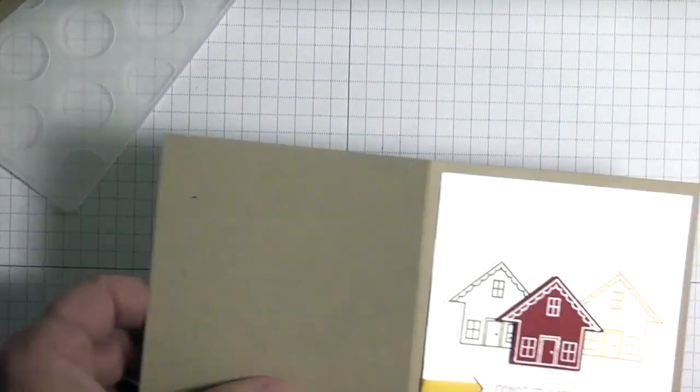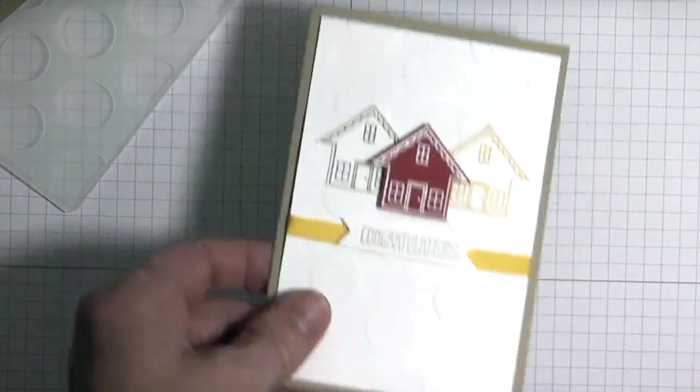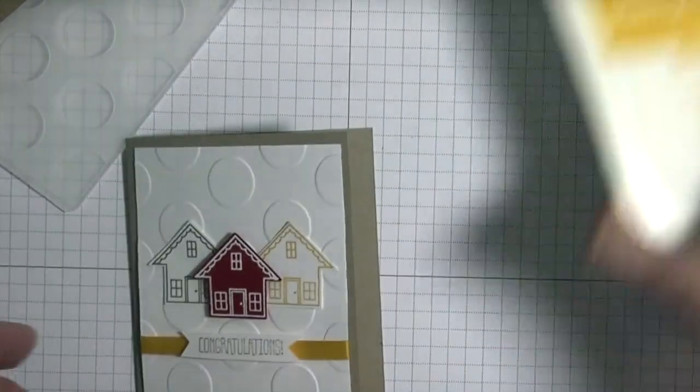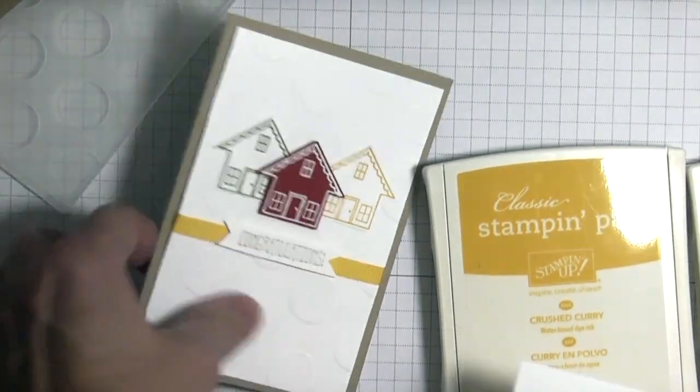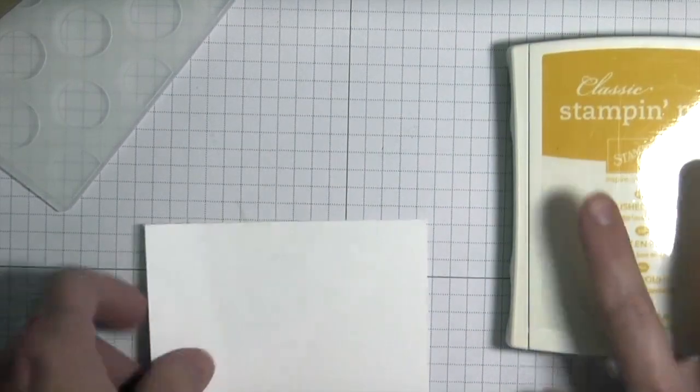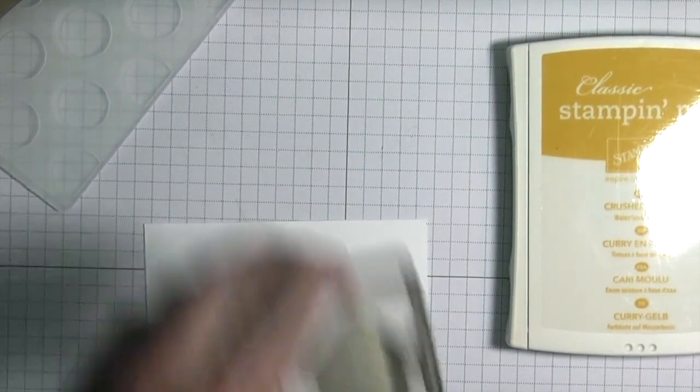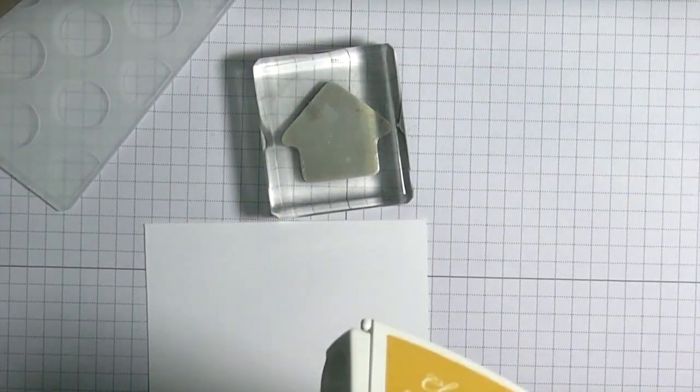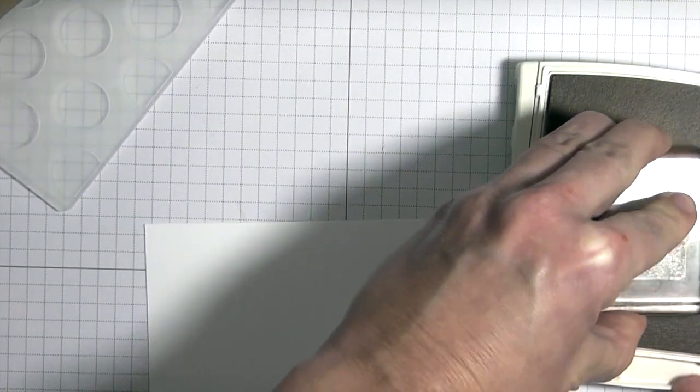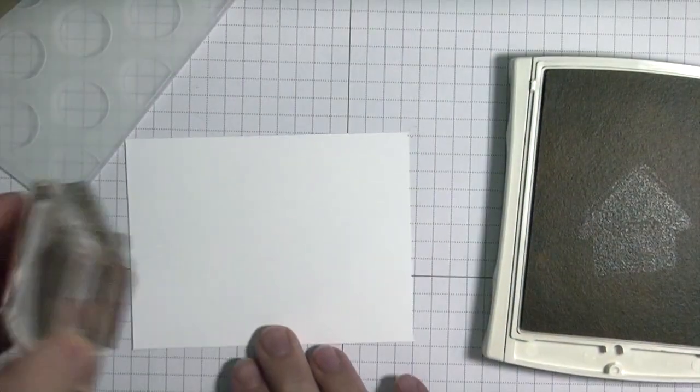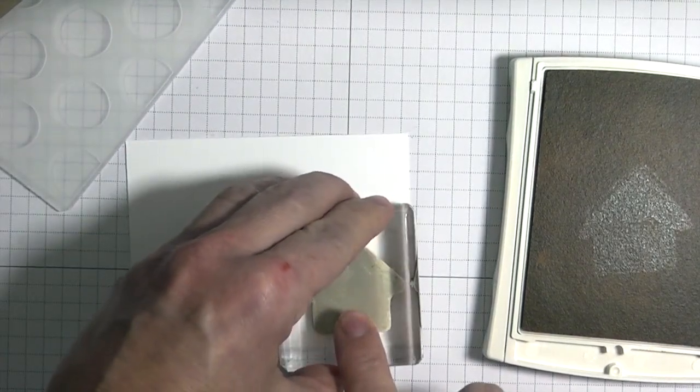I'm going to be using Crushed Curry and Old Olive on Whisper White to stamp out the houses, and then after that I will be using the What's Up punch to cut it out.